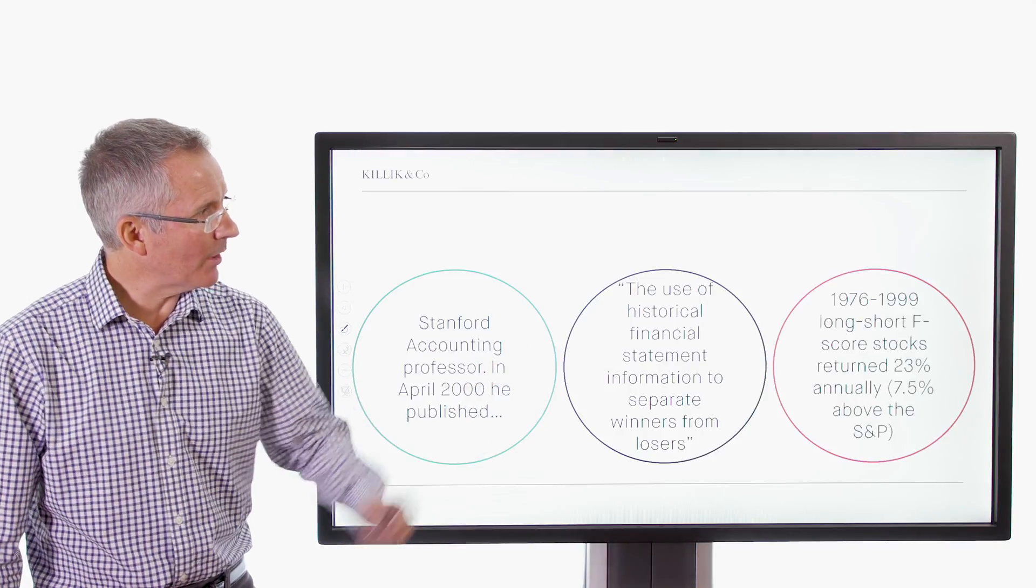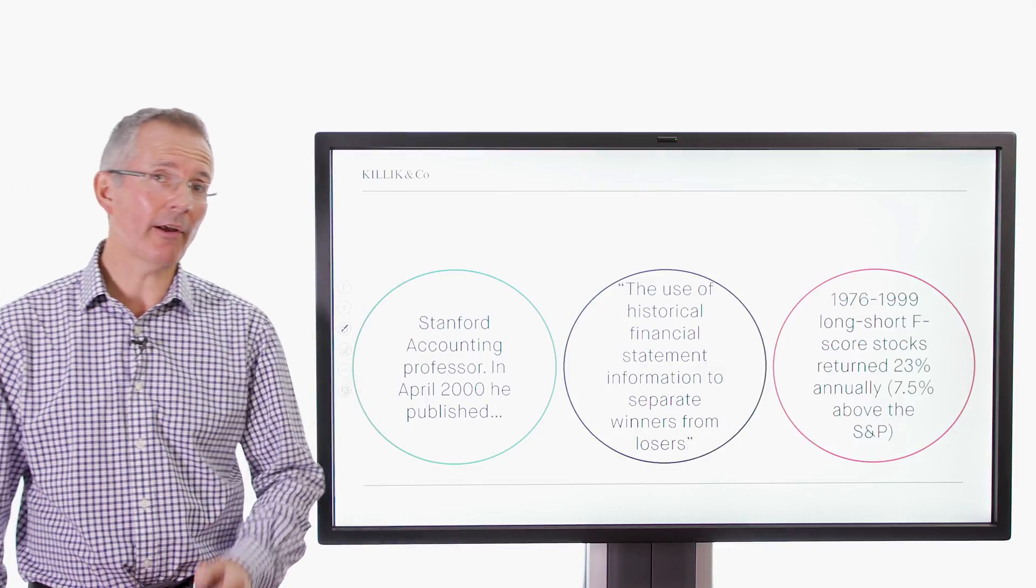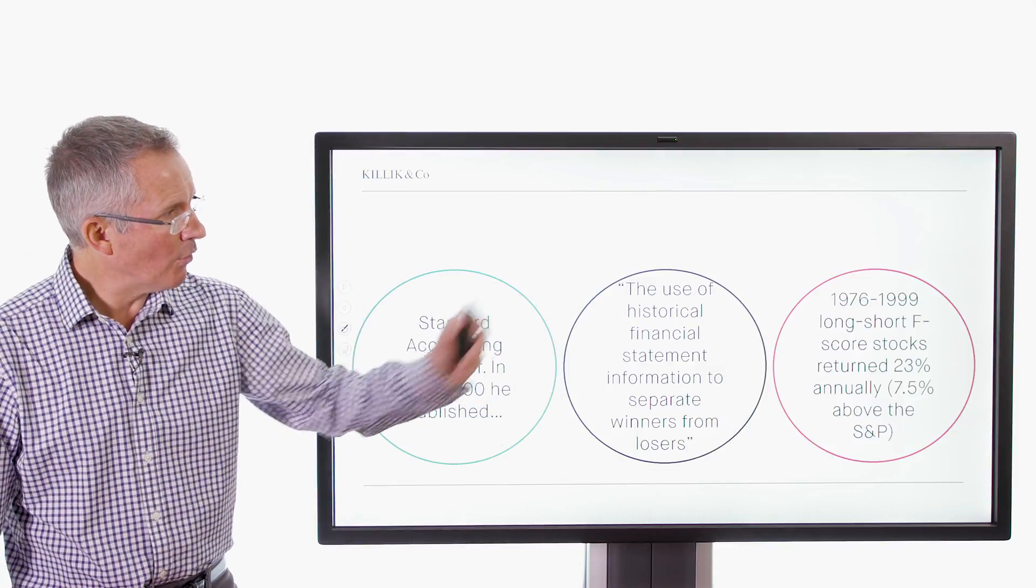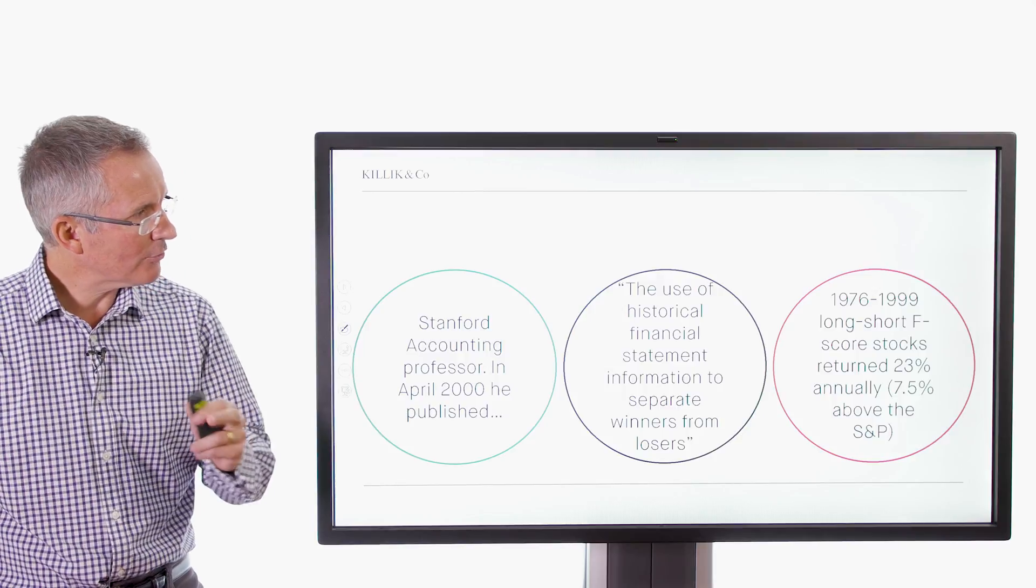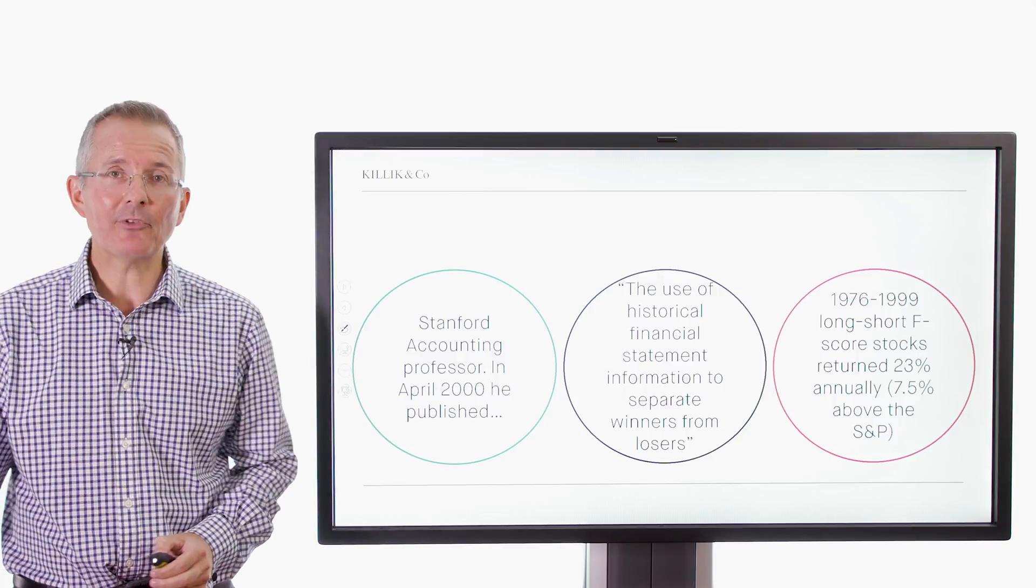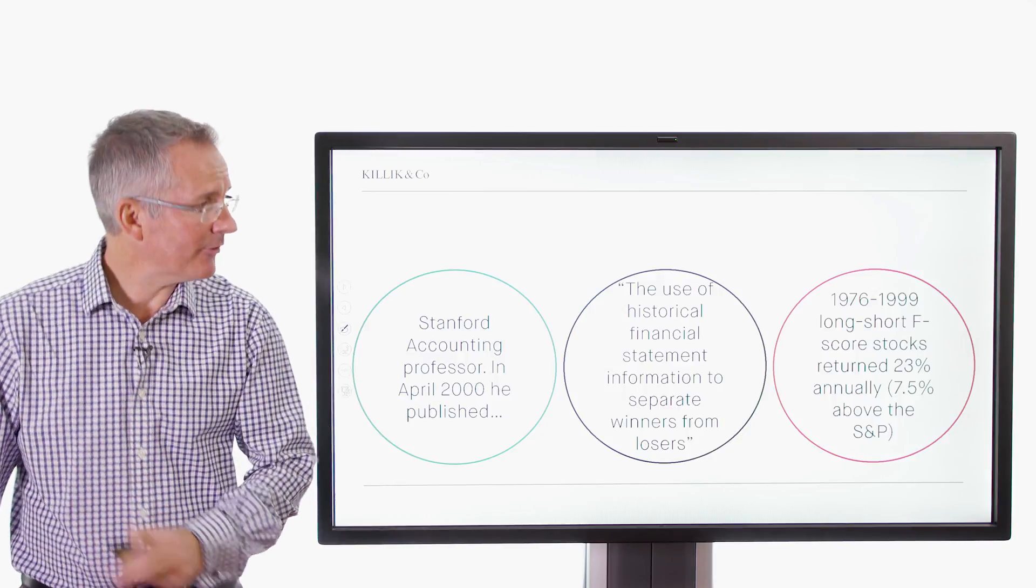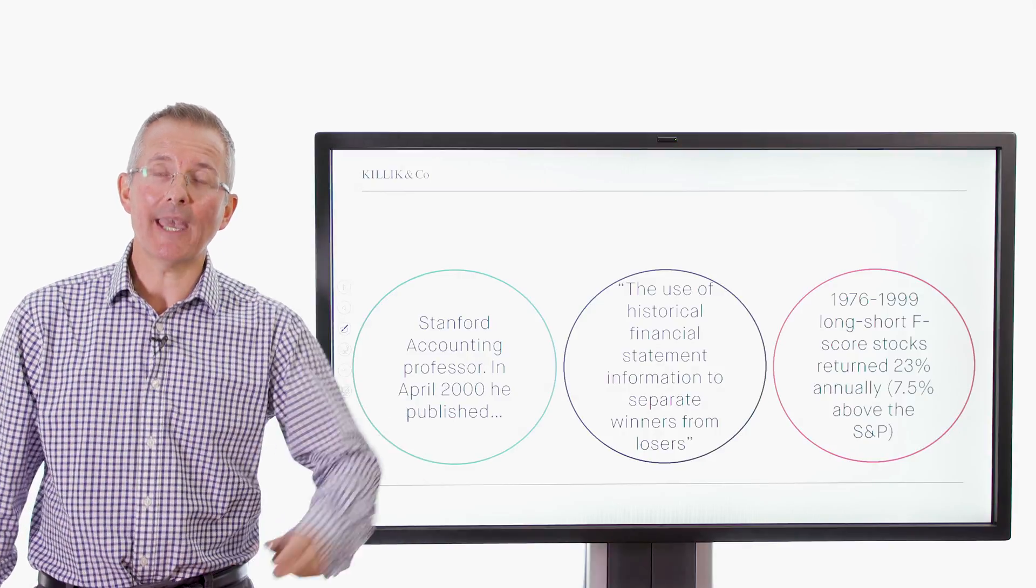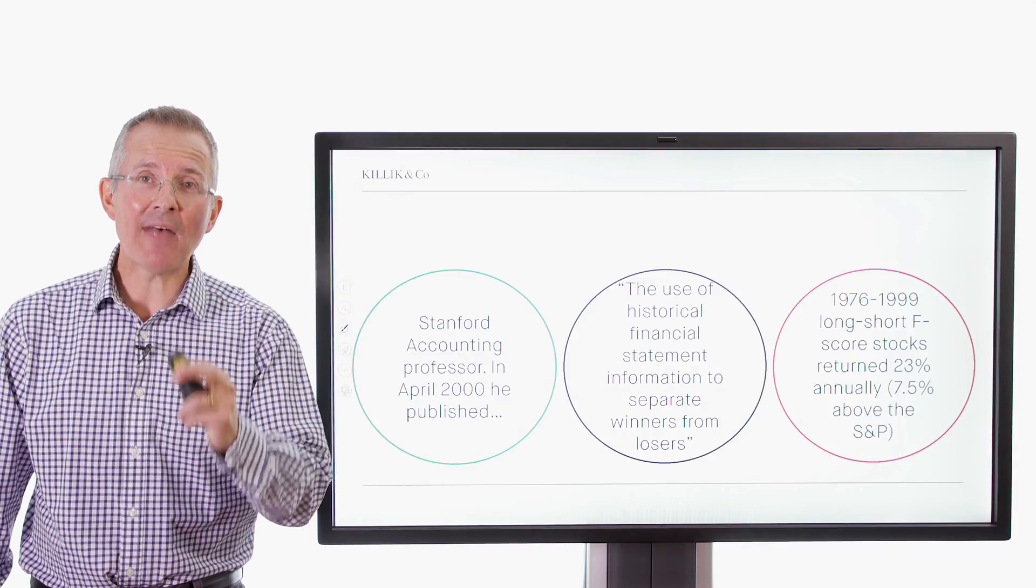And basically, what he suggested was that between 1976 and 1999, it's quite a long study period, long short F-score stock strategies returned 23% annually. That's a 7.5% premium over the broader market and fairly consistently at that.